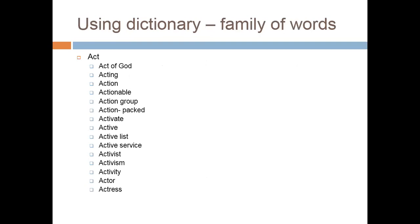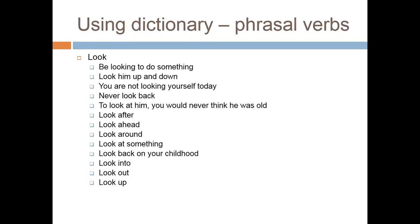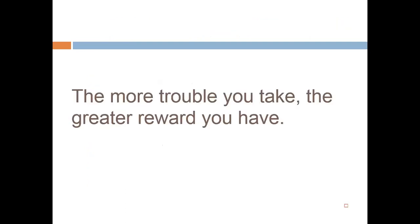When we talk about words in the dictionary, note that one word can have different meanings when used with different prepositions — meaning changes. For example: 'look around,' 'look at something,' 'look back on your childhood' — one word with different prepositions gives different meanings. If you use words with correct prepositions, you will get better. The more trouble you take, the greatest reward you have. Push yourself to do difficult things.